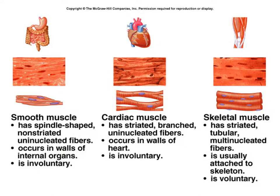When looking at the actual shape and striations, or lack of striations, of each muscle, we notice some differences. Smooth muscle has a spindle shape, is non-striated, and has a uninucleated fiber — one nucleus for each muscle cell. It is found in the walls of the internal organs and is involuntary.